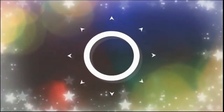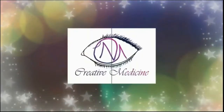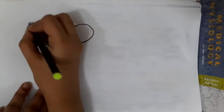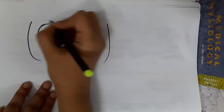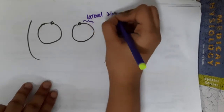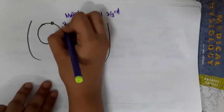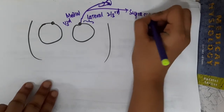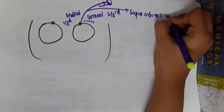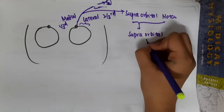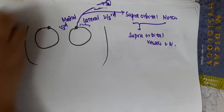Welcome to Creative Medicine. In this lecture, we will learn about where the supraorbital notch is present in the skull. If you see, it is present at the lateral two-thirds and medial one-third junction. The supraorbital notch transmits the supraorbital vessels and nerves.